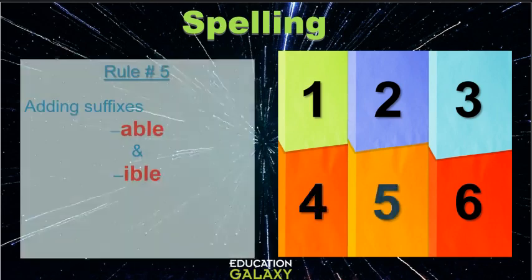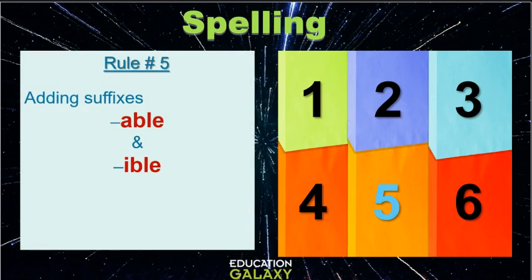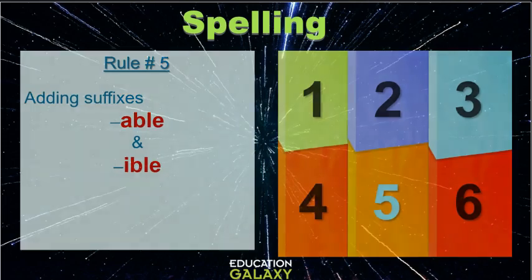Rule number five. Adding suffixes ABLE and IBLE. Remember, a root word is a basic word without a prefix or suffix. For example, the word eat. That's a basic root word. And you can add the suffix ING at the end to make a new word. All right, so we are going to learn when to add ABLE or IBLE at the end of a word to make a new word.